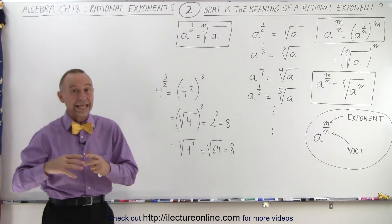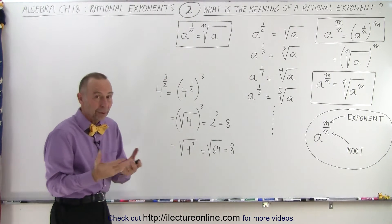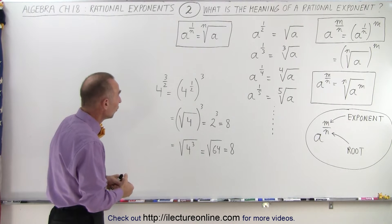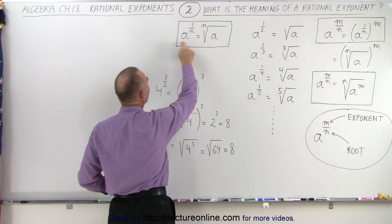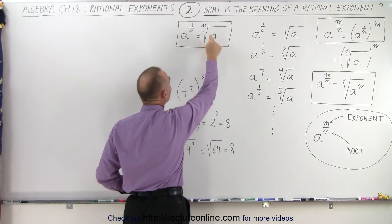When we have a fractional exponent or a rational exponent that looks like 1 over a number, let n represent an integer number. So when we have something that looks like a to the 1 over n, that really means the same thing as the nth root of a.